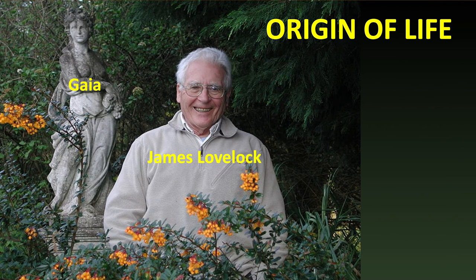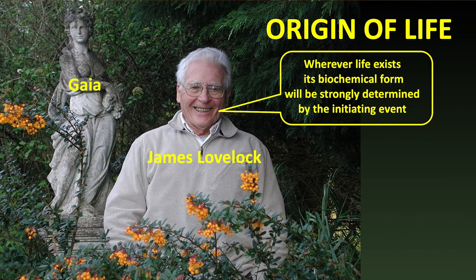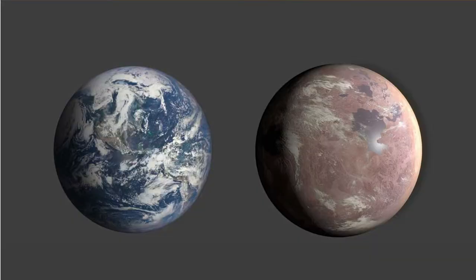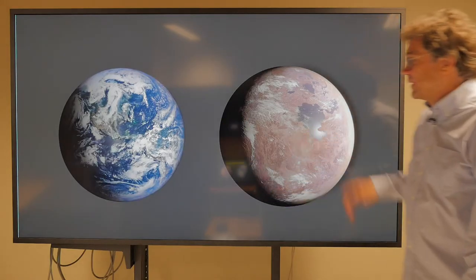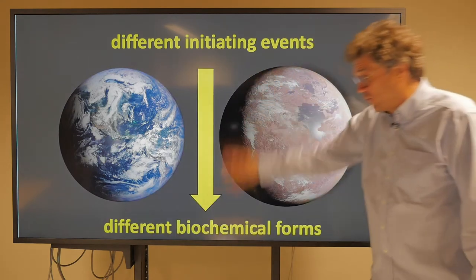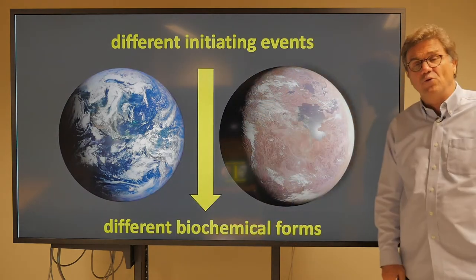With respect to the origin of life, Lovelock said: 'Wherever life exists, its biochemical form will be strongly determined by the initiating events.' So even what life is depends on how it got started. If we have two planets with different initiating events, we might get different biochemical forms.